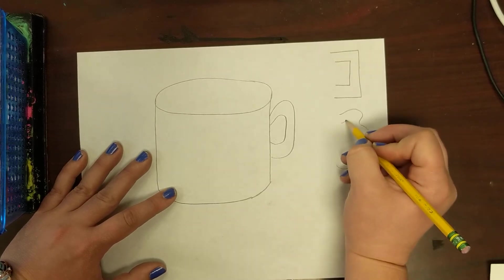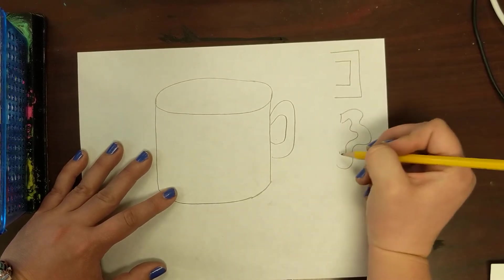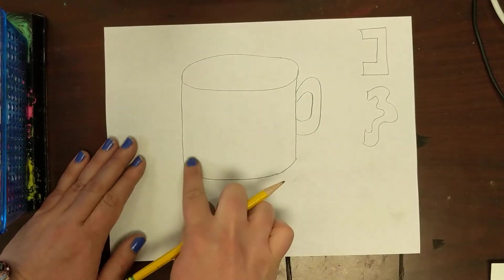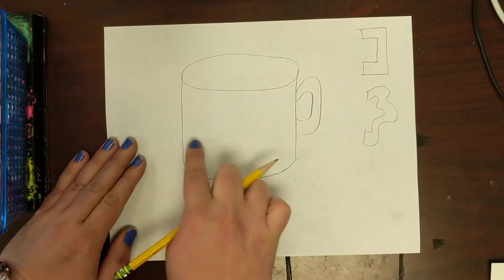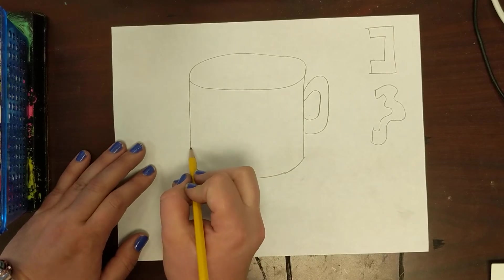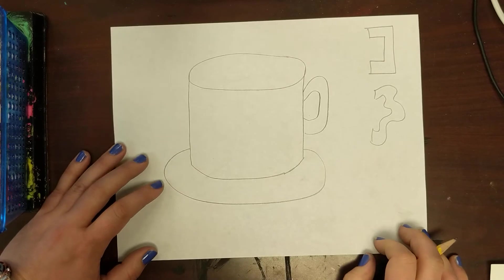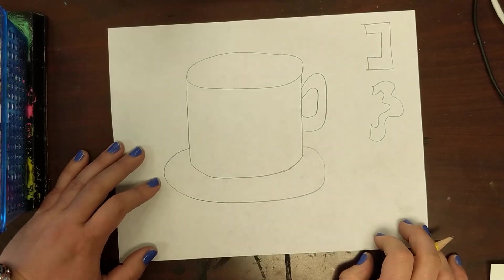Now we need our saucer, so that's the little plate that your cup sits on. So again, another oval going around. And now you guys can do your patterns.